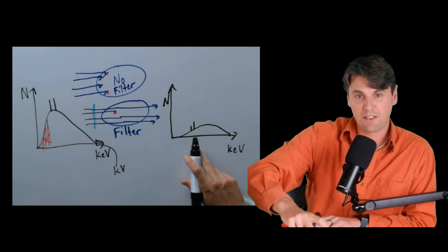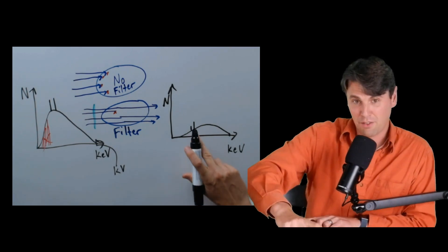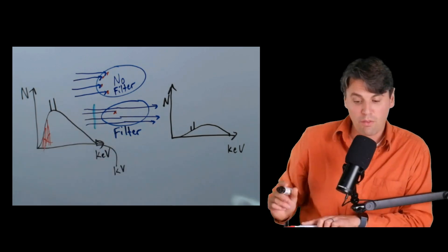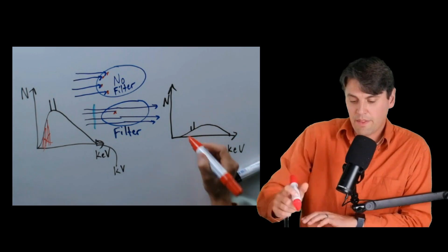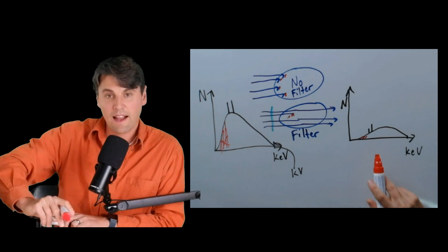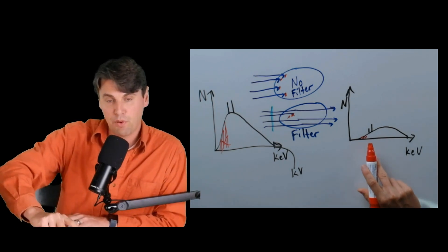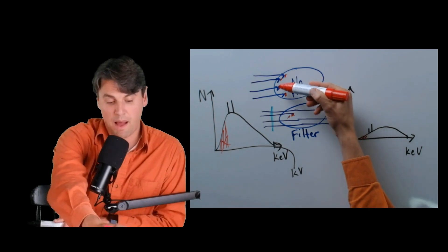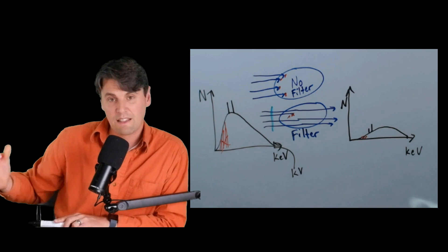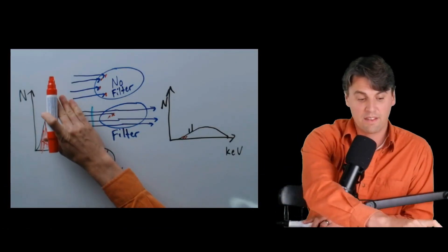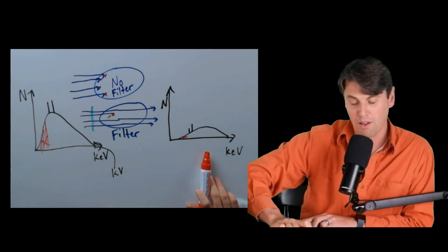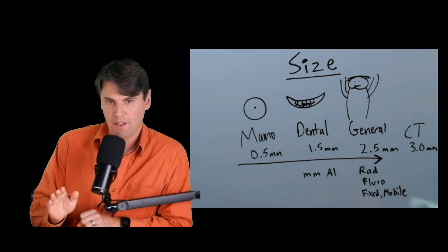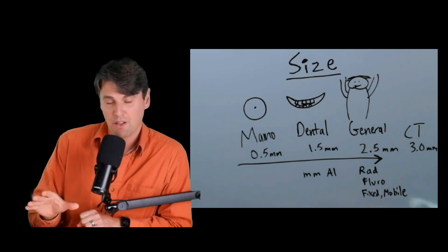Those little peaks in the spectrum are what we call characteristic x-rays — see our video on characteristic x-rays and x-ray production if you need a refresher. The whole hump is due to Bremsstrahlung radiation. After filtration, there are still a few lower energy x-ray photons in the beam, but we've significantly reduced them. We're no longer depositing as much dose near the surface that has no chance of reaching the image receptor. For patient safety, the NCRP has defined minimum filtration limits that depend on the size of the patient and type of acquisition.